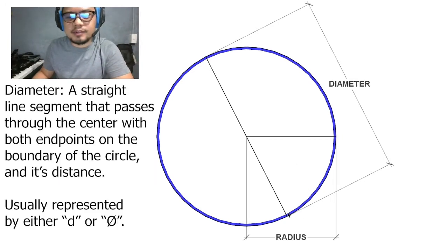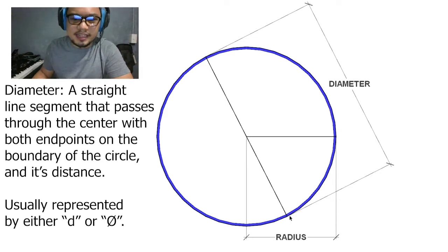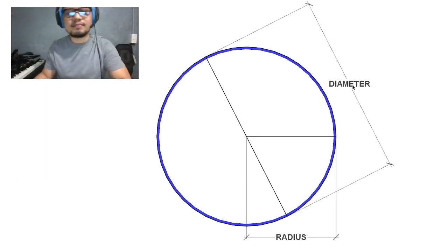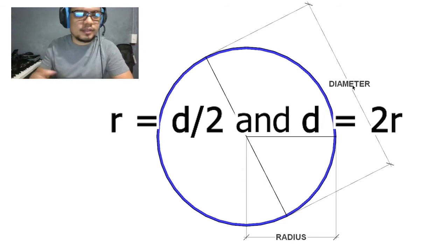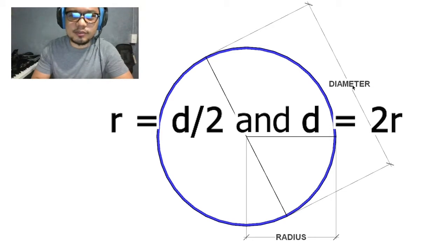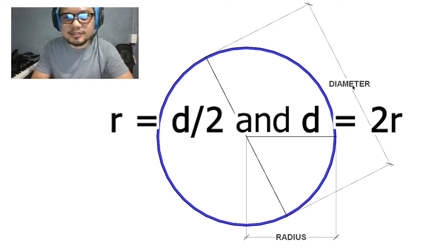Furthermore, if we were to take a point starting from the outside boundary of a circle and then go through the center of the circle and end on a point on the opposite side of the starting point of that line, then we would have a length called the diameter. So with that information, we can determine that the radius is equal to one half the diameter, and the diameter is equal to two times the radius.